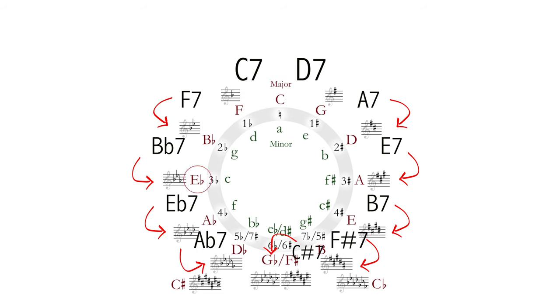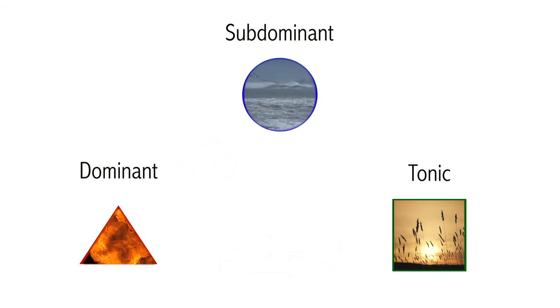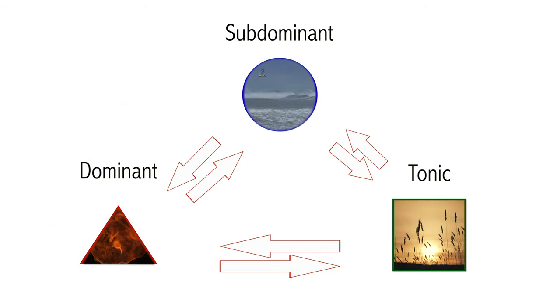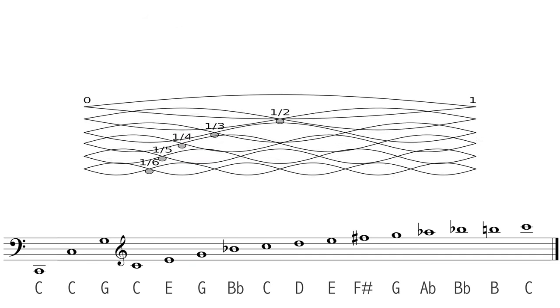So to recap, there are three harmonic functions in tonal music: tonic, dominant, and subdominant, all of which have different feelings to create motion and grammar in music, because tension, motion, and release, because voice leading, because harmonic series, because math, because universe.